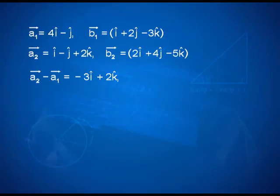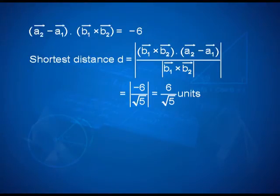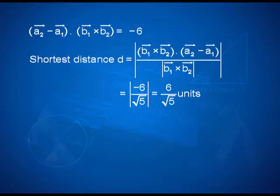Now we are ready to find A1, B1, A2, B2. These vectors can be identified without writing the vector equations if you are confident. We find A2 minus A1, B1 cross B2, its magnitude, their dot product, and plug values into the shortest distance formula. In this case the numerator turns out to be negative 6, which happens because of the orientation of B1 cross B2. Therefore the absolute value sign is important, and it gives the shortest distance as 6 divided by root 5 units.